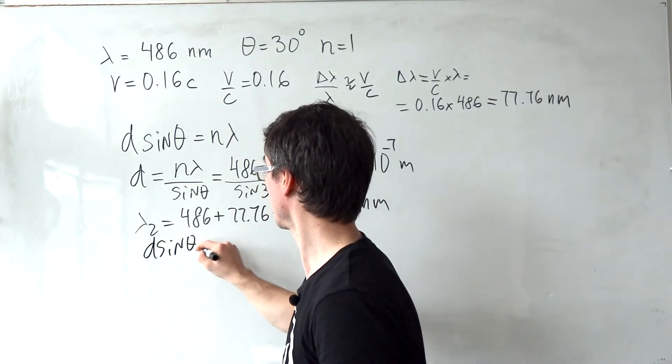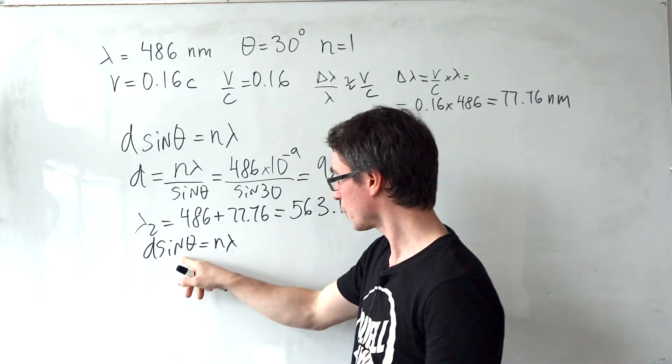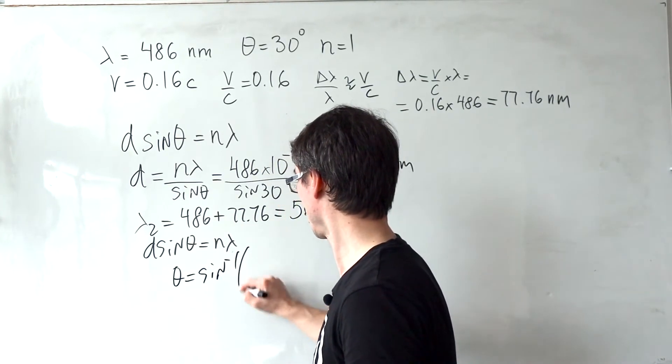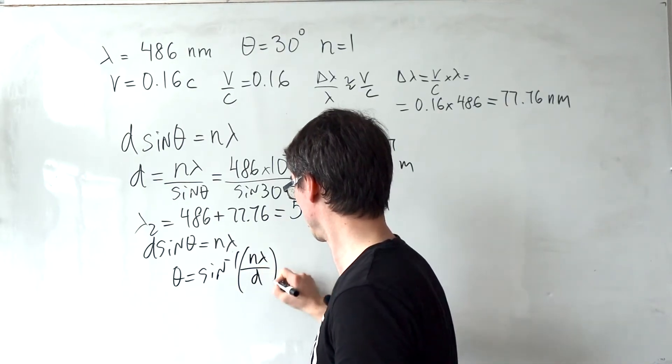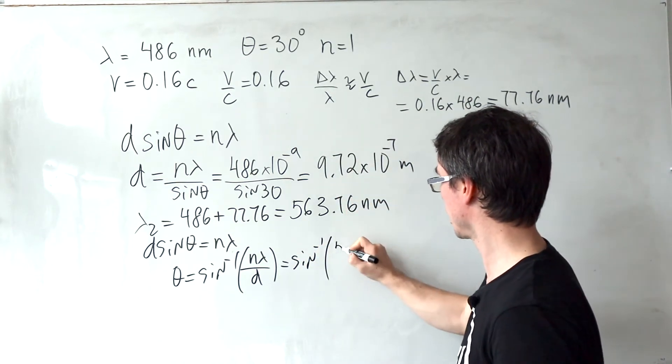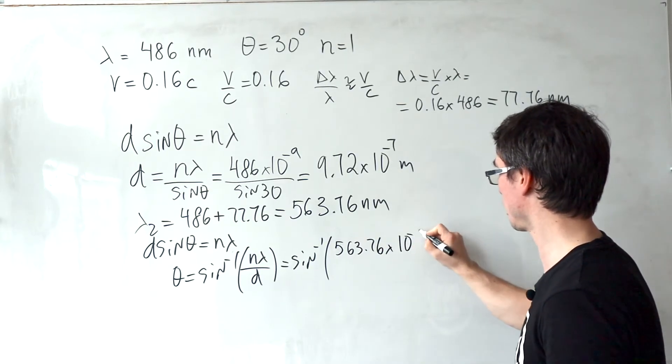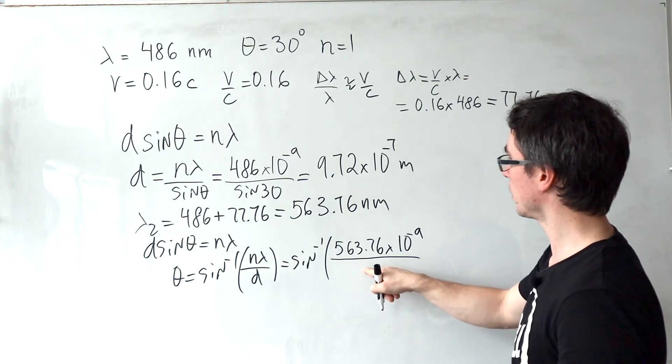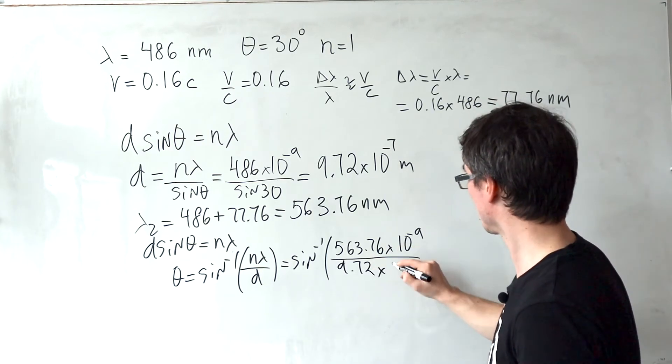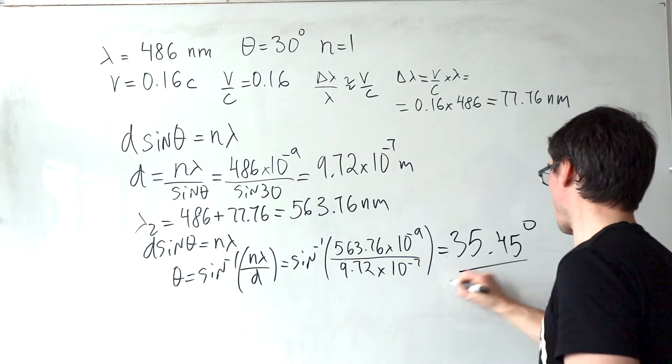And now we're ready to plug this back into this equation. So we can say that D sine theta is equal to N lambda. We are looking for the first order angle. So this here will be equal to 1. Theta will be inverse sine of N lambda over D, which is the inverse sine of the new wavelength, 563.76 nanometers times 10 to the power of minus 9. Divide this by the line separation, which is 9.72 times 10 to the power of minus 7, giving me around 35.45 degrees.